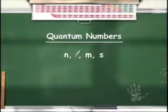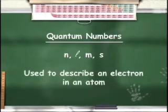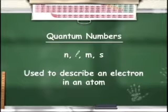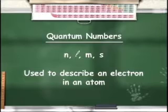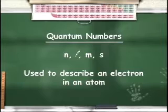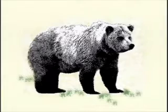Each electron within an atom can be described by its own unique set of these four quantum numbers. As we go through this lesson, it's important to remember that no two electrons in an atom can have the exact same set of four quantum numbers. Bear with me—we'll see why later.